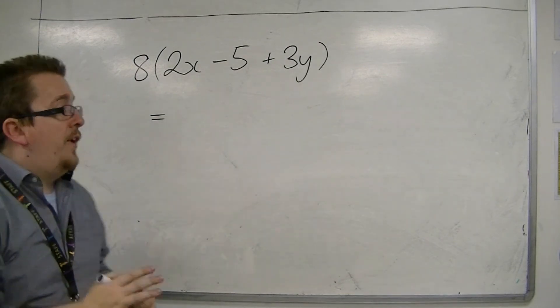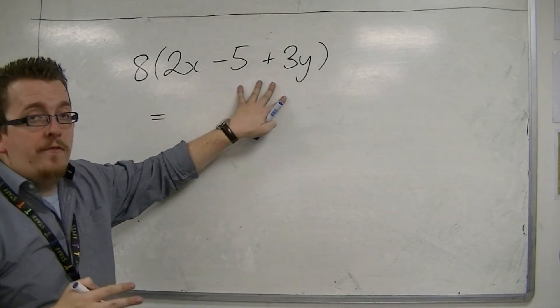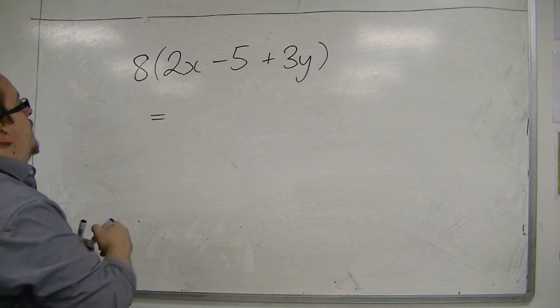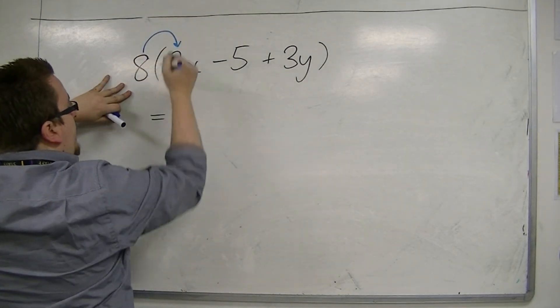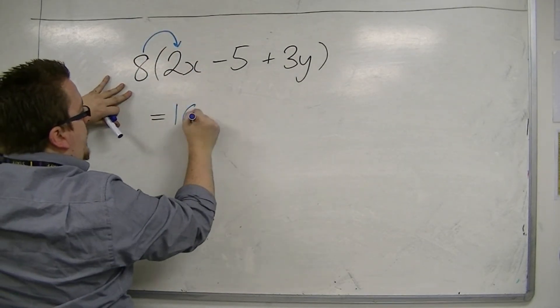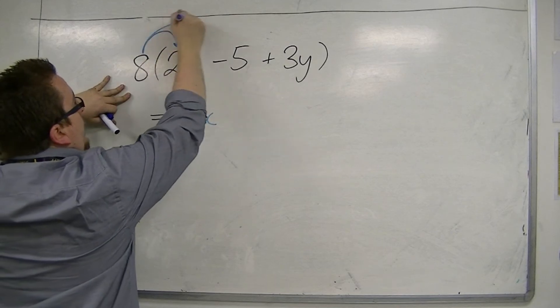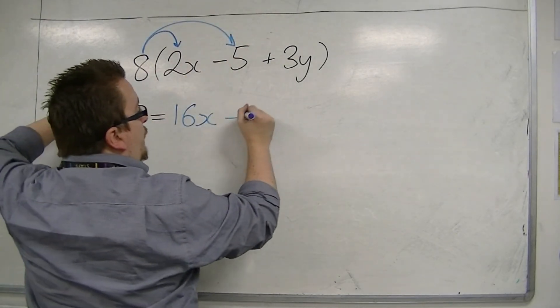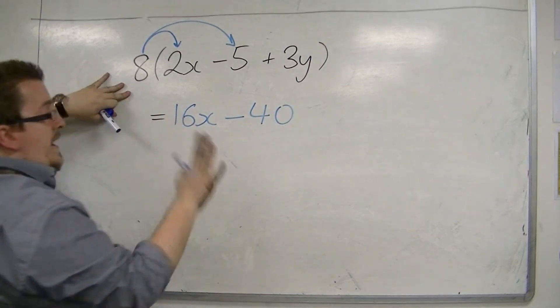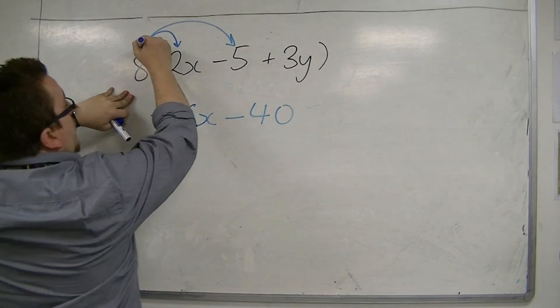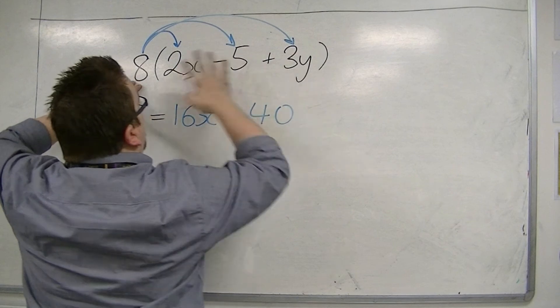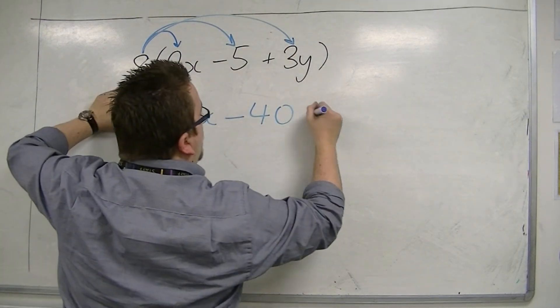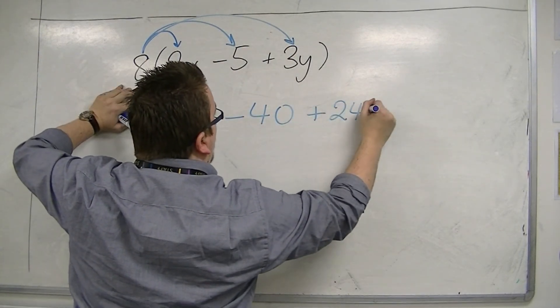So what this means is that I've got 8 lots of whatever's inside the bracket. So I've got 8 lots of the 2x, which would be 16x. I've got 8 lots of the minus 5, which is 8 times minus 5 is minus 40. And then I've got 8 lots of the 3y. So 8 lots of the 3y would be 24y.